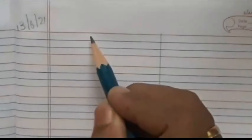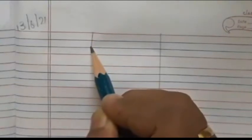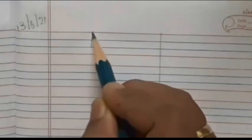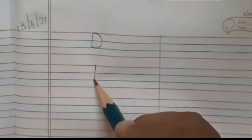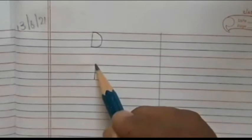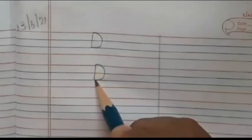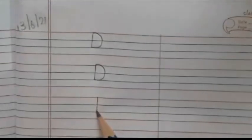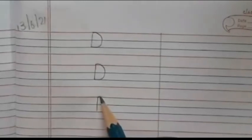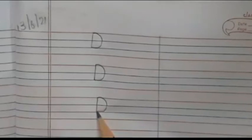Now take your notebook. Write today's date. First we are going to write capital letter D. So first touch the first red line and draw a straight line down and touch the second blue line. Now go back to the top and draw a curved line and touch the second blue line. From the red line draw a curved line and touch the second blue line. Capital letter D.